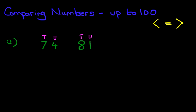74 and 81. Now when we are comparing numbers, what we do is we always look at the digit on the left hand side first. So let's do that. We've got 7 tens in 74 and 8 tens in 81. So we're comparing the tens with the other tens. We're not looking at units at the moment, only the tens. Which number is smaller? Is it 7 or 8? Well that's quite easy. It's 7.